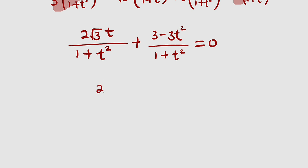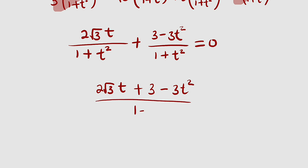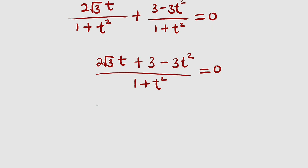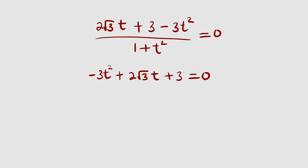So the numerator gives us 2 root 3t plus 3 minus 3t squared, divided by 1 plus t squared, all equal to 0. Since the denominator cannot be 0, we set the numerator equal to 0. Rearranging: negative 3t squared plus 2 root 3t plus 3 equals 0. Multiplying both sides by negative 1 gives us 3t squared minus 2 root 3t minus 3 equals 0.